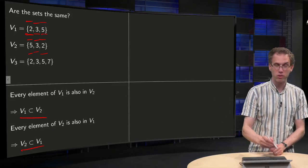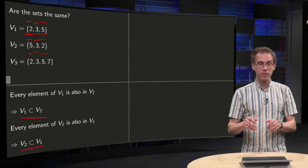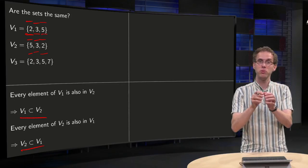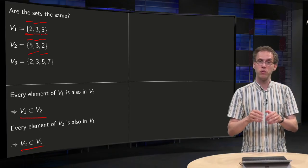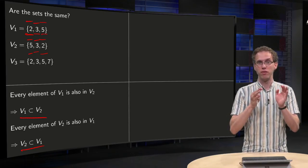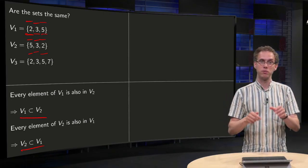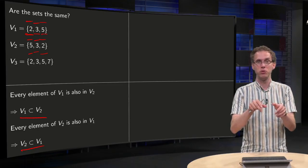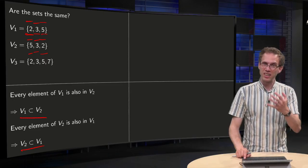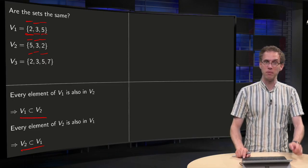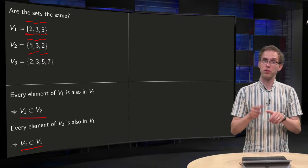So V2 is also contained in V1. That means V1 is within V2 and V2 is within V1, and if you have those two together, that means V1 equals V2, because both V1 is contained in V2 and V2 is contained in V1. And that's the trick, that's how you can show that two sets are the same, by showing those two inclusions.